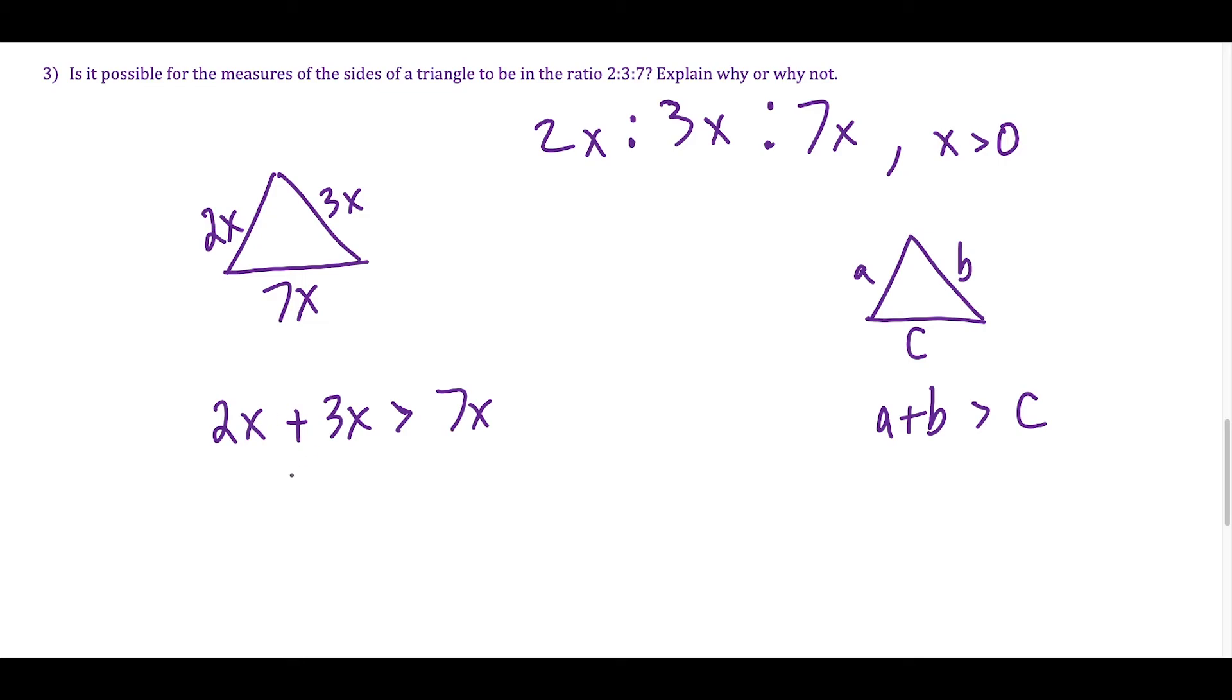But if we look here, 2X plus 3X is going to give you 5X. And this inequality I can already see is not true. Remember, we specified because it represents the lengths of the sides of a triangle, X has to be greater than 0. So that means I'm allowed to divide by X, and I don't have to worry about any division by 0 or dividing by a negative.